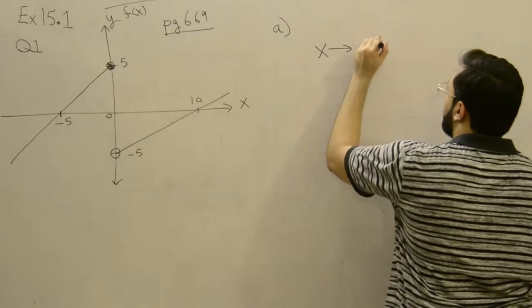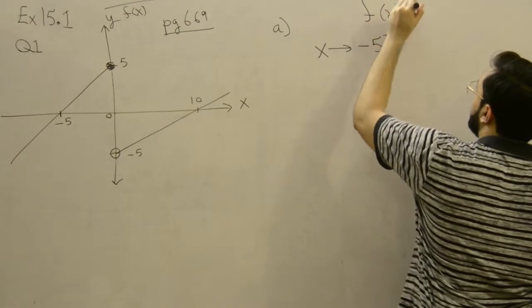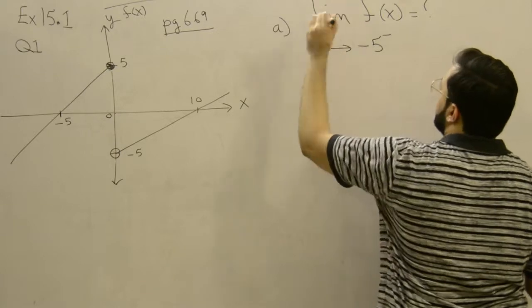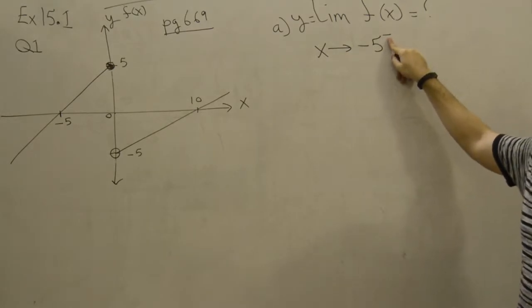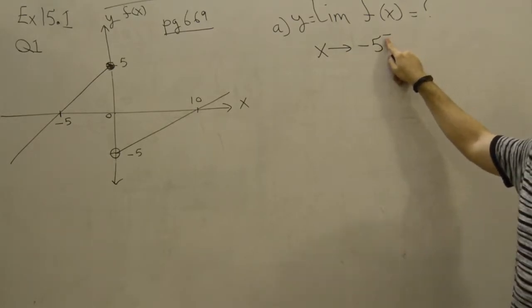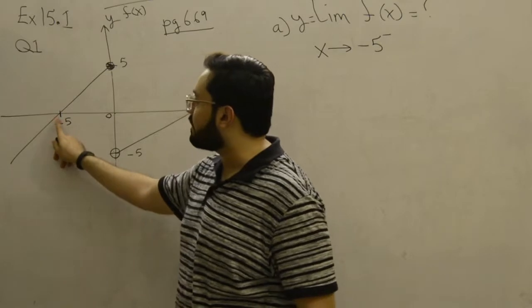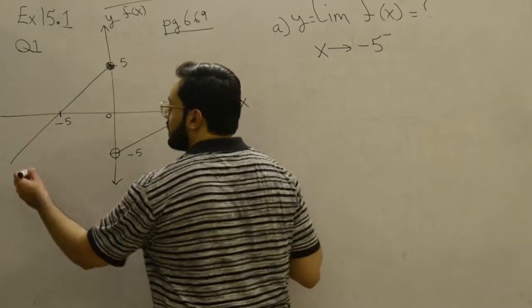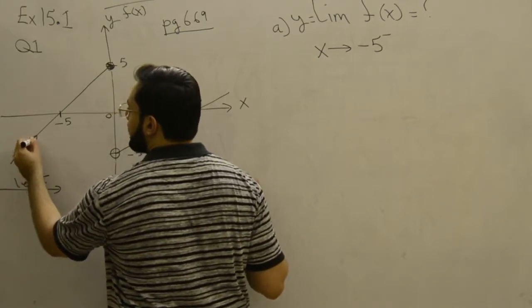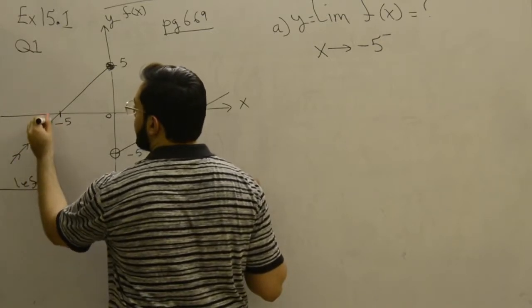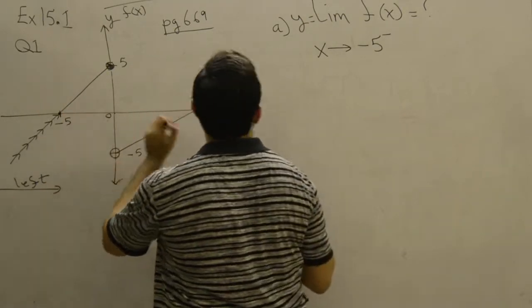the limit when x approaches negative 5 from the left side and they're asking us to find out the limit. Because x is approaching minus 5, and you have already—in the notation you have given the direction—this negative symbol at the top indicates left side. So let's take a look at our minus 5 on the x-axis. Minus 5 is located here, and as you can see the left side has this pathway available. So if we travel and reach minus 5, we need to find out its corresponding y-value at this point. So as you can see the corresponding y-value here is 0, so the answer for this question is 0.